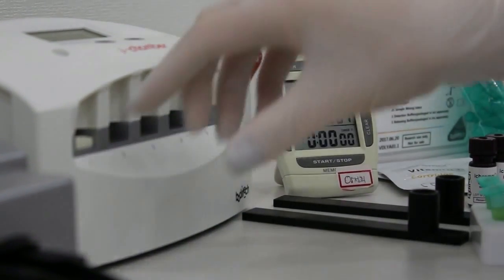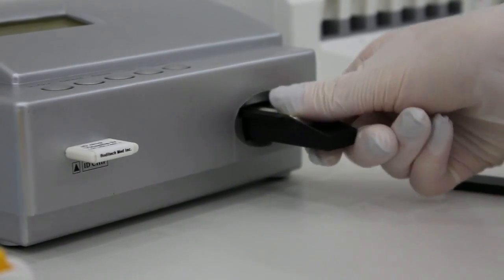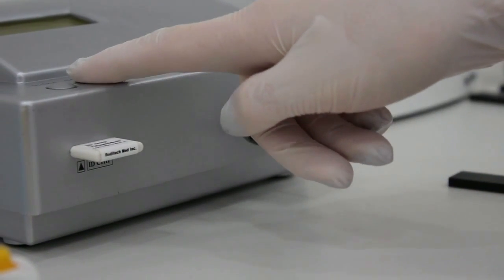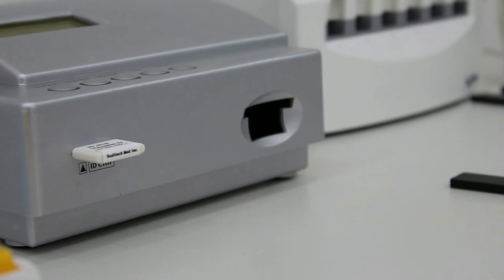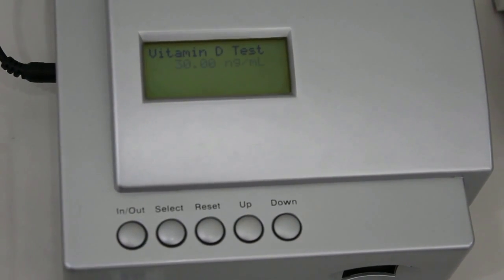After 8 minutes, immediately insert the sample loaded test cartridge into the test cartridge holder. Press select button on the iCHROMA reader to start the scanning process. The vitamin D test result will be displayed on screen.